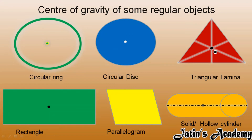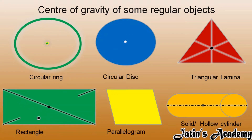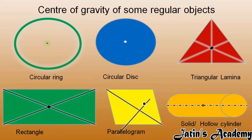Next, a rectangular or four-sided figure — a quadrilateral — has its center of gravity at the intersection of its diagonals. Similarly, a parallelogram, which also has four sides, has its center of gravity at the intersection of its diagonals.